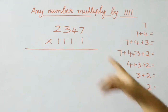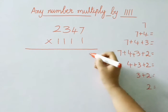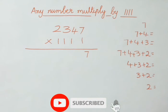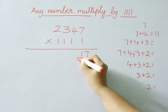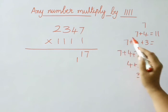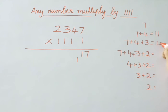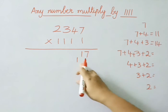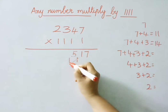See the next example: 2,347 multiplied by 1111. First digit as it is, we are going to write. Now add 2 digits: 7 plus 4 is 11. So write down 1 and carry 1. Next add 3 digits from right to left: 7 plus 4 is 11, 11 plus 3 is 14. So 14 plus carry 1 is 15 — write 5, carry 1.